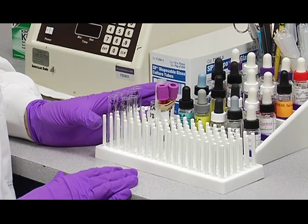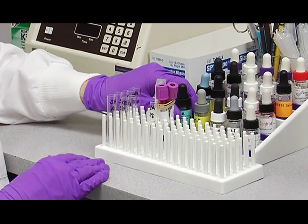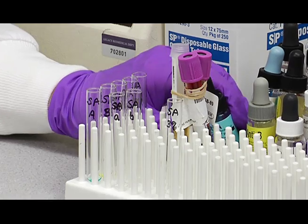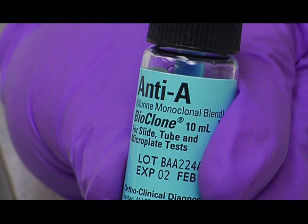And after you've labeled your tubes, we'll add the reagents to the forward tubes here. So you pick up your vial of anti-A and you'll add that to the tube labeled A.